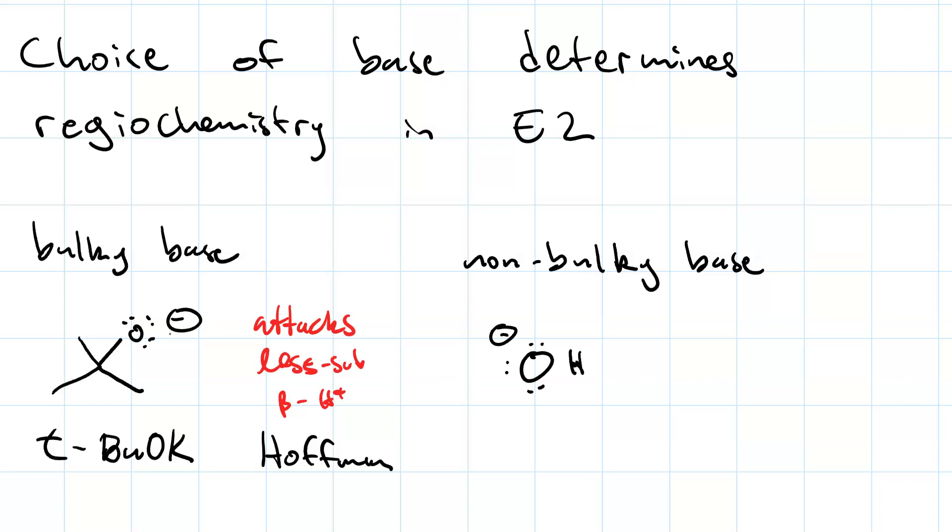The non-bulky base, like hydroxide or methoxide, these will all favor the more stable product. And so they will attack the more substituted proton to give you Zaitsev.